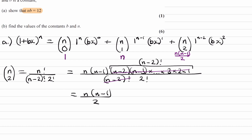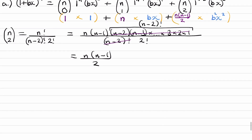The 1 to the power of n, 1 to the n minus 1, and 1 to the n minus 2 are all just 1, so we can ignore those terms. For the bx parts: bx to the 0 is 1, bx to the 1 is bx, and bx to the 2 is b squared x squared. Simplifying, this gives us 1 plus nbx plus n times n minus 1 times b squared over 2 times x squared.